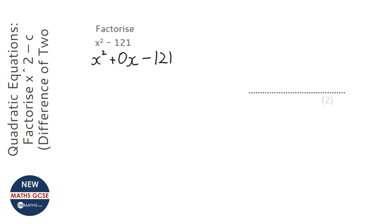We need to find two numbers that multiply together to make -121 and add together to make nothing.